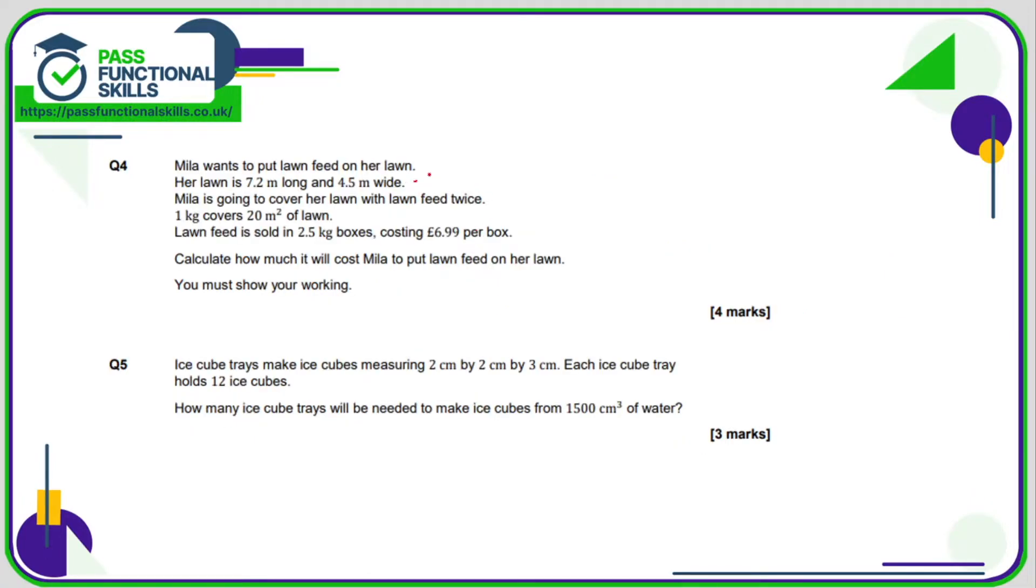Question number four: the first thing we need to do is work out the area of the lawn, which is 7.2 times 4.5, which is 32.4 square meters. But she's covering the lawn twice, so she's going to be covering double this area: 32.4 times 2 is 64.8 square meters. And one kilo covers 20 square meters, so how many 20 square meters are there in 64.8? We're going to divide that by 20.